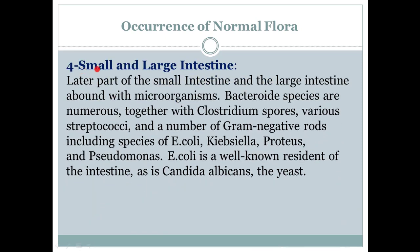Next is the small and large intestine. The later part of the small intestine and the large intestine abound with microorganisms — meaning microorganisms are present in very large quantities there. Bacteroides species are numerous, meaning large in number, together with Clostridium spores — Bacteroides species are found in very large numbers along with Clostridium in our small and large intestine.